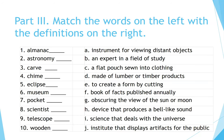Part 3: Match the words on the left with the definitions on the right. I'll read the definitions. Instrument for viewing distant objects. An expert in a field of study. A flat pouch sewn into clothing. Made of lumber or timber products. To create a form by cutting. Book of facts published annually. Obscuring the view of the sun or moon. Device that produces a bell-like sound. Science that deals with the universe. Institute that displays artifacts for the public.